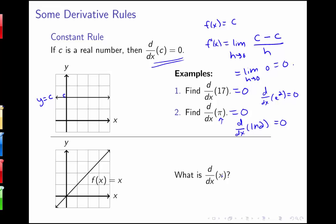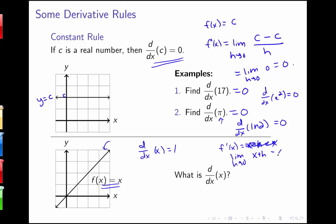What about the derivative of just the function x? Well, here we've got the graph of y equals x, and we know that everywhere along this graph the slope is 1, so we can see just from the graph that the derivative of x is 1. We could also use the definition of the derivative and see that the limit as h goes to 0 of (x+h−x) all over h equals the limit as h goes to 0 of h over h, which is 1.